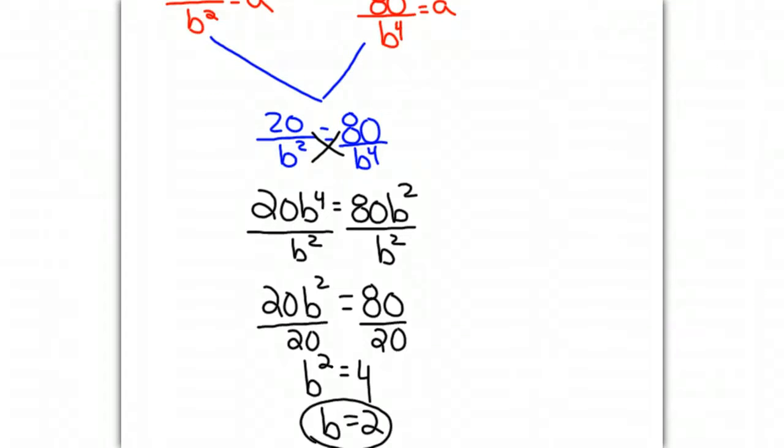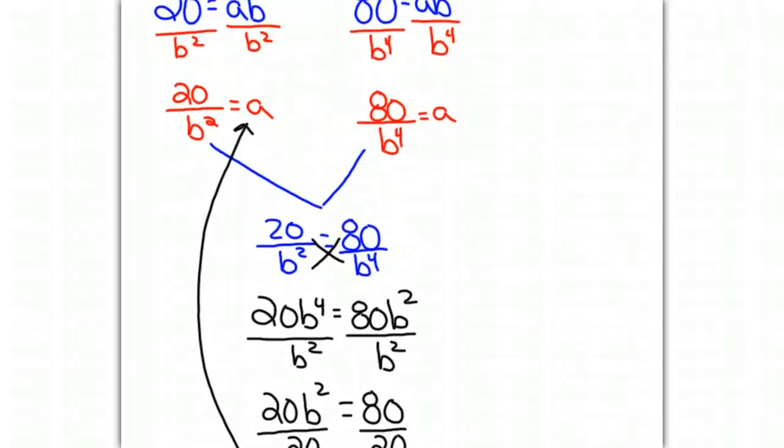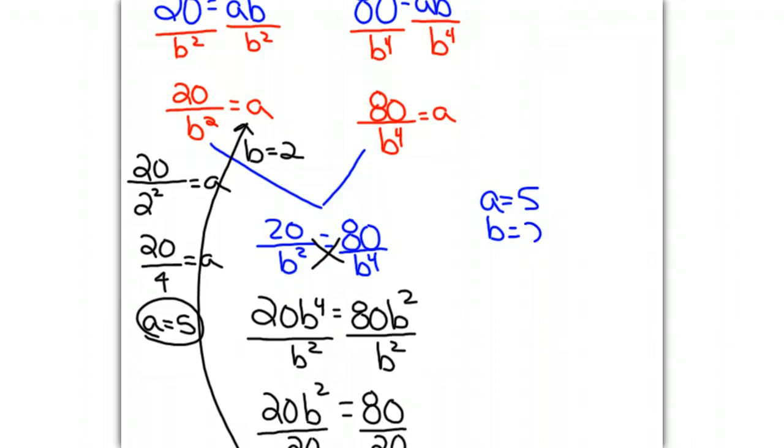Now I have my b value. I can go back up to where I had solved for a, substitute the b value in since we know that b equals 2, and solve for a. 20 over 2 squared, which is going to be 20 over 4, and so we pick up an a value of 5. Now I have an a value of 5, a b value of 2, so my equation will be y equals 5 times 2 to the x.